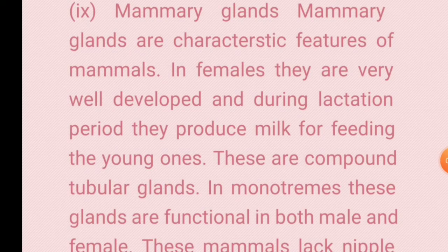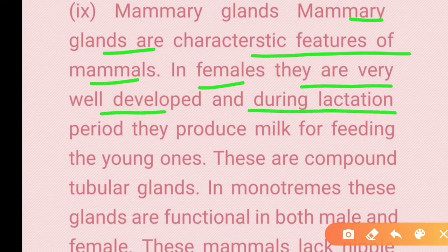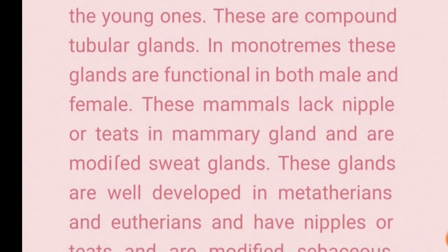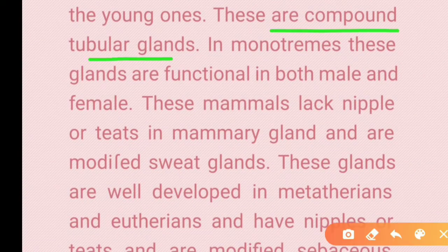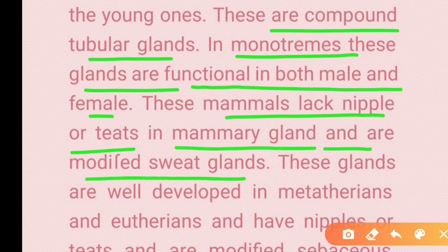Mammary glands are a characteristic feature of mammals. In females they are well developed, and during the lactation period they produce milk for feeding the young ones. These are compound tubular glands. In monotremes, these glands are functional in both male and female, they secrete milk, but these mammals lack nipples and teats, and the mammary glands are modified sweat glands.